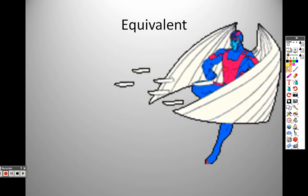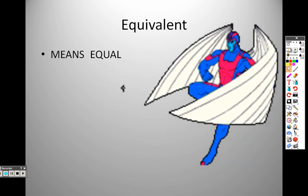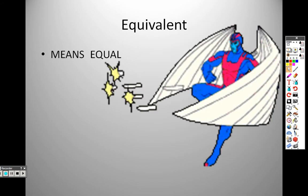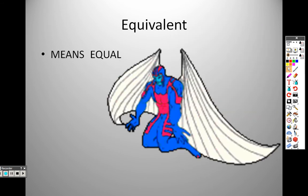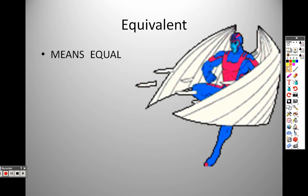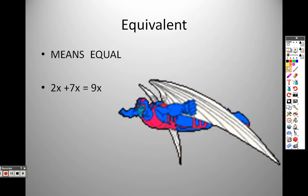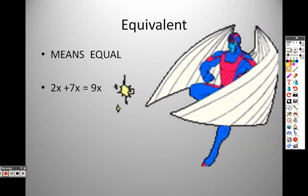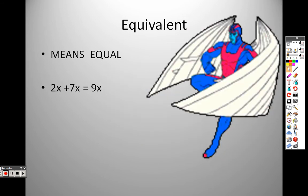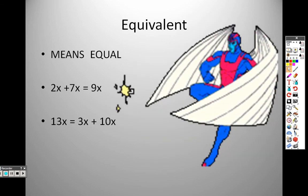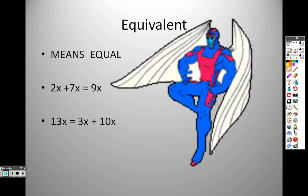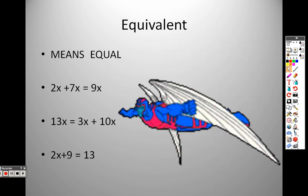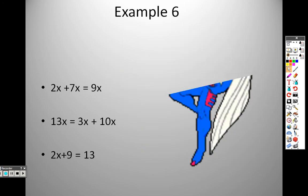Equivalent. Basically, it means equals. If you ever hear me saying the phrase equivalent, it's the same as saying equals. If you hear me saying equals, it's equivalent. So, this is an example. 2x plus 7x equals 9x, right? They're equivalent to each other, because 2x and 7x is 9x. 13x equals 3x plus 10x. Those are equivalent as well. 2x plus 9 equals 13. 2x plus 9 is equivalent to 13.